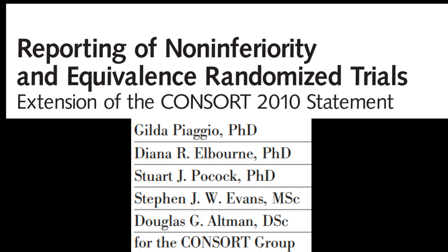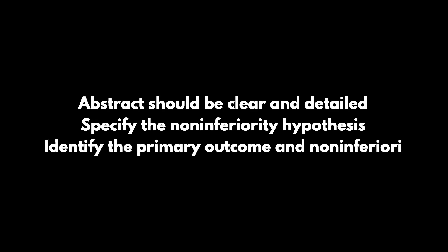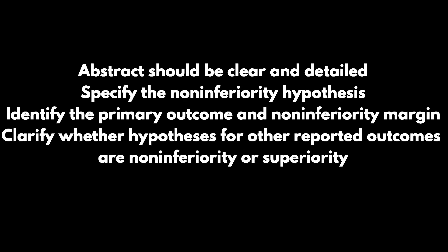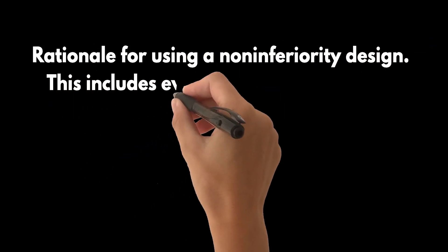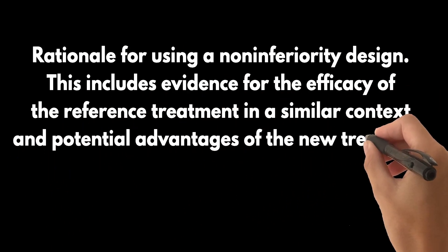The CONSORT 2010 statement is a set of guidelines designed to improve the reporting of randomized trials. It has been extended specifically for non-inferiority and equivalence trials. One of the key recommendations is to clearly identify a study as a non-inferiority trial in the title and abstract, which helps readers quickly understand the nature of the study and makes it easier to include in systematic reviews. The abstract should specify the non-inferiority hypothesis, identify the primary outcome and non-inferiority margin, and clarify whether hypotheses for other reported outcomes are non-inferiority or superiority. The introduction should provide the rationale for using a non-inferiority design, including evidence for the efficacy of the reference treatment and potential advantages of the new treatment.